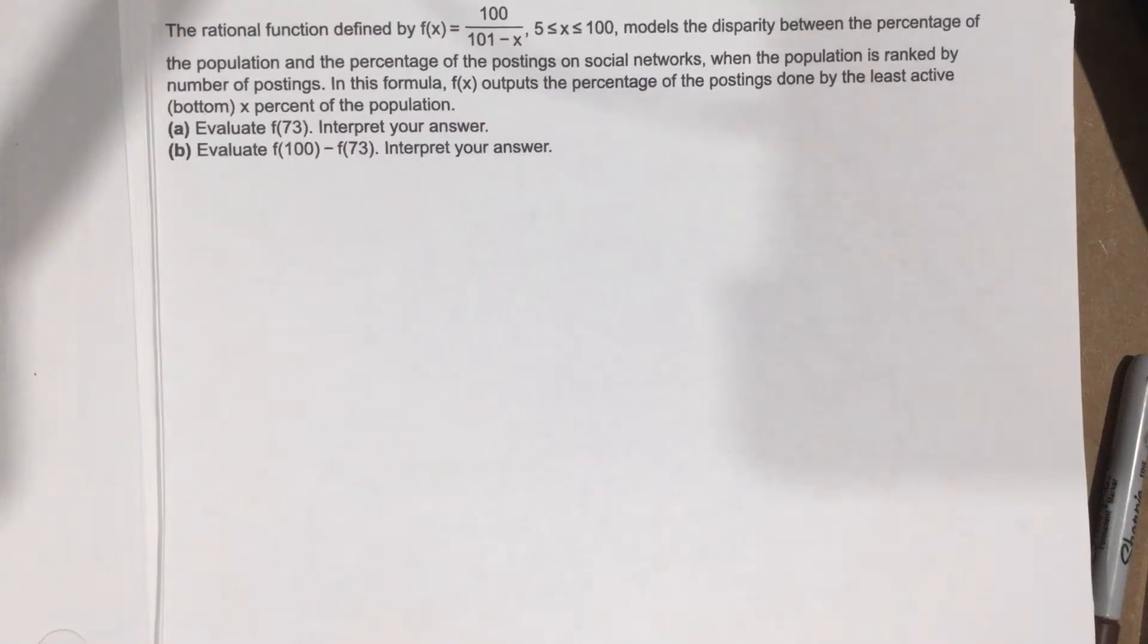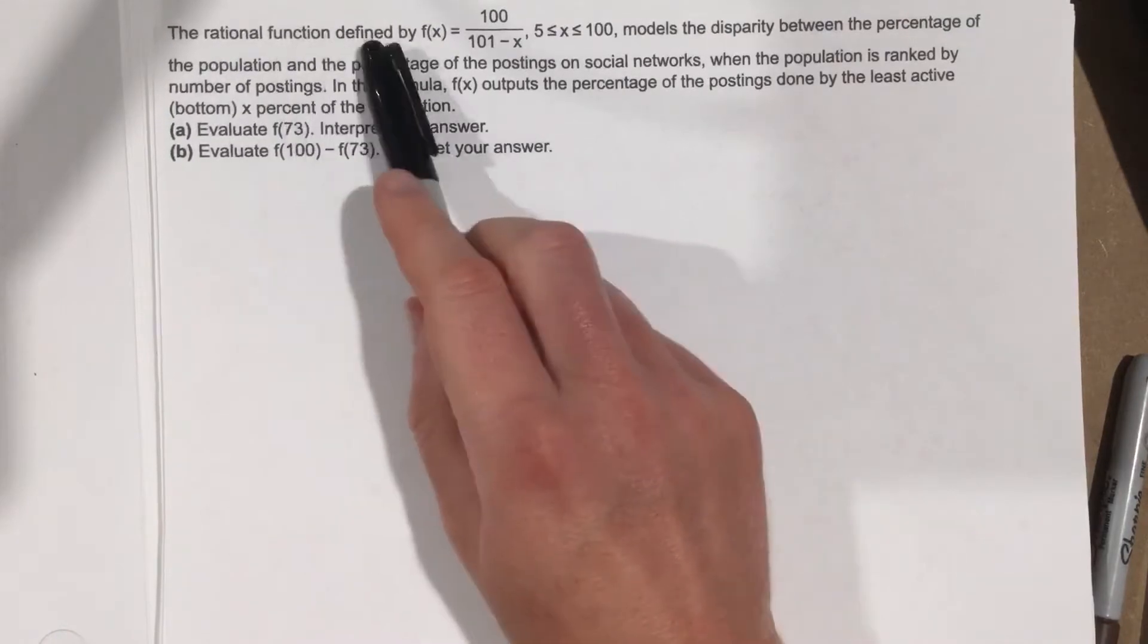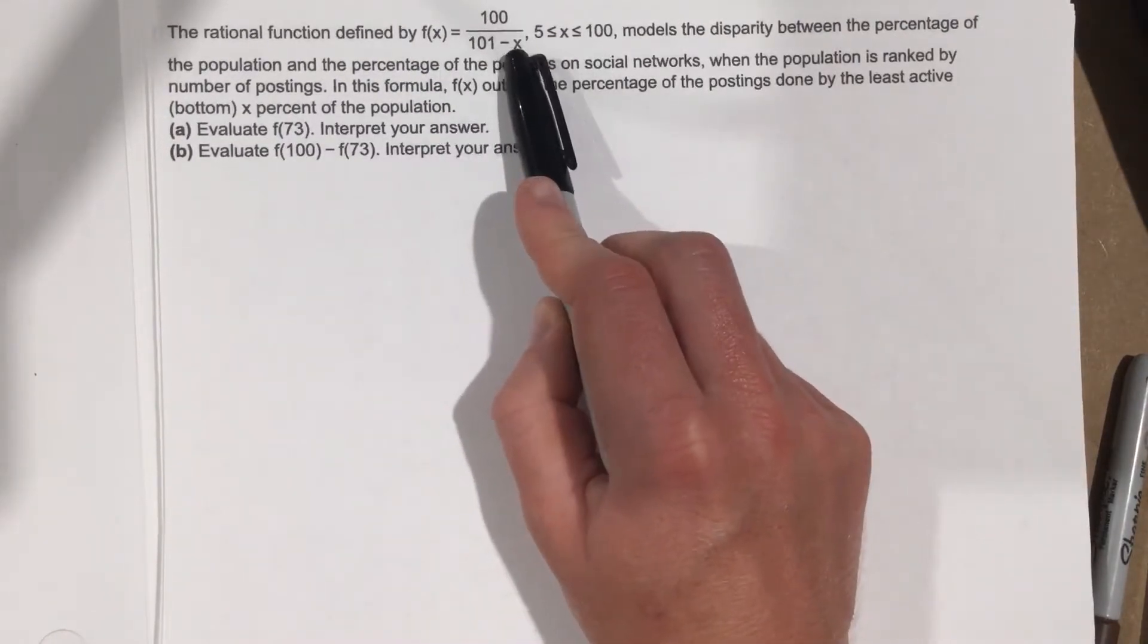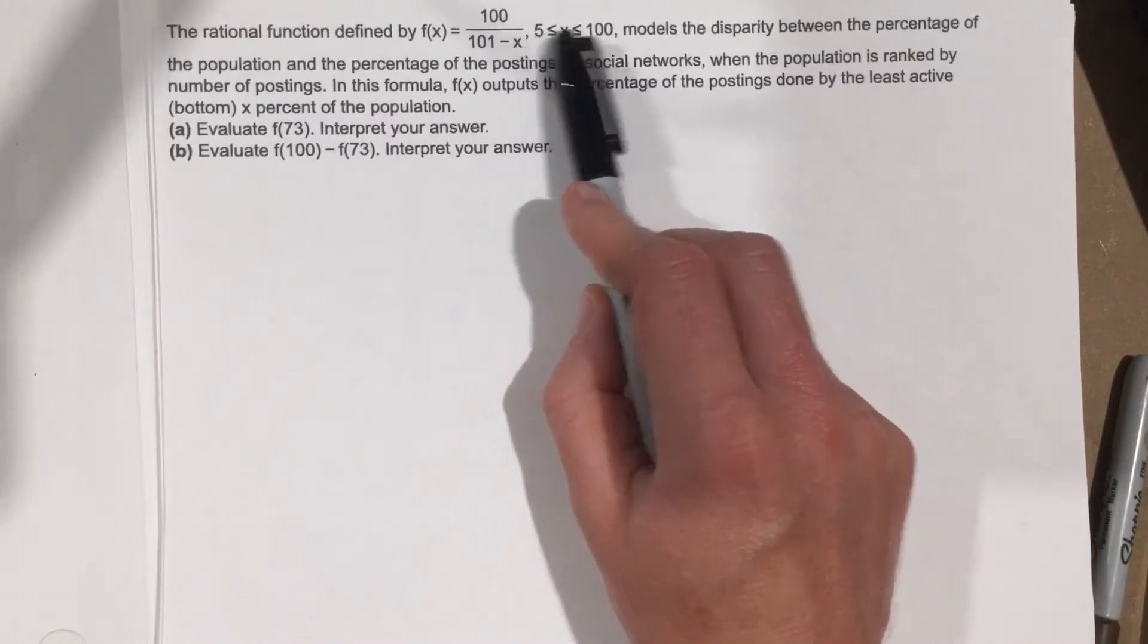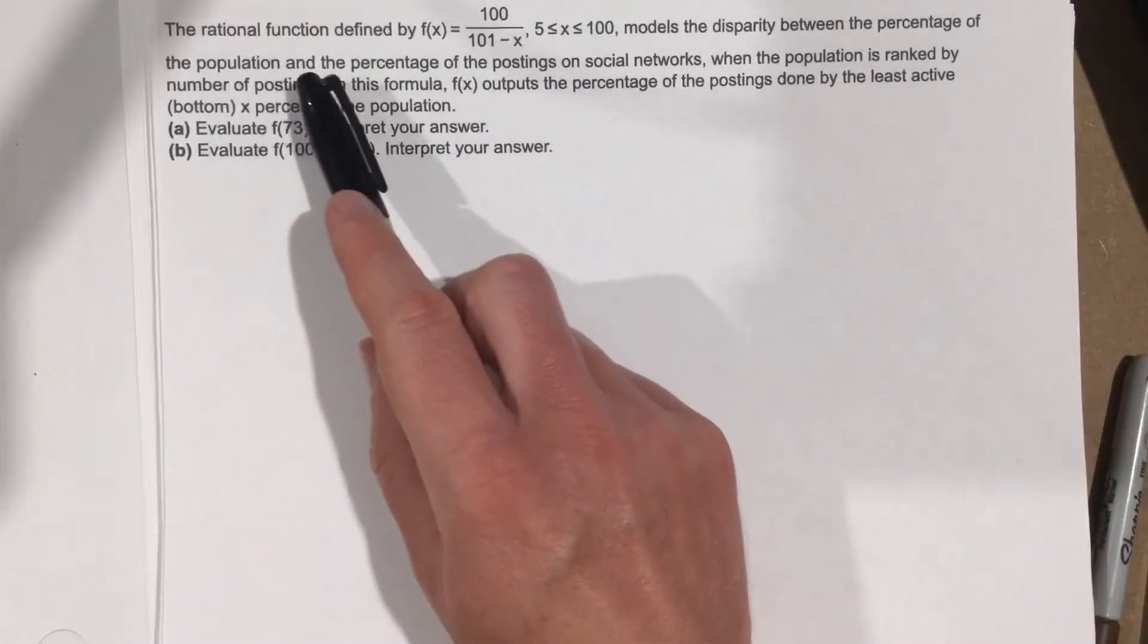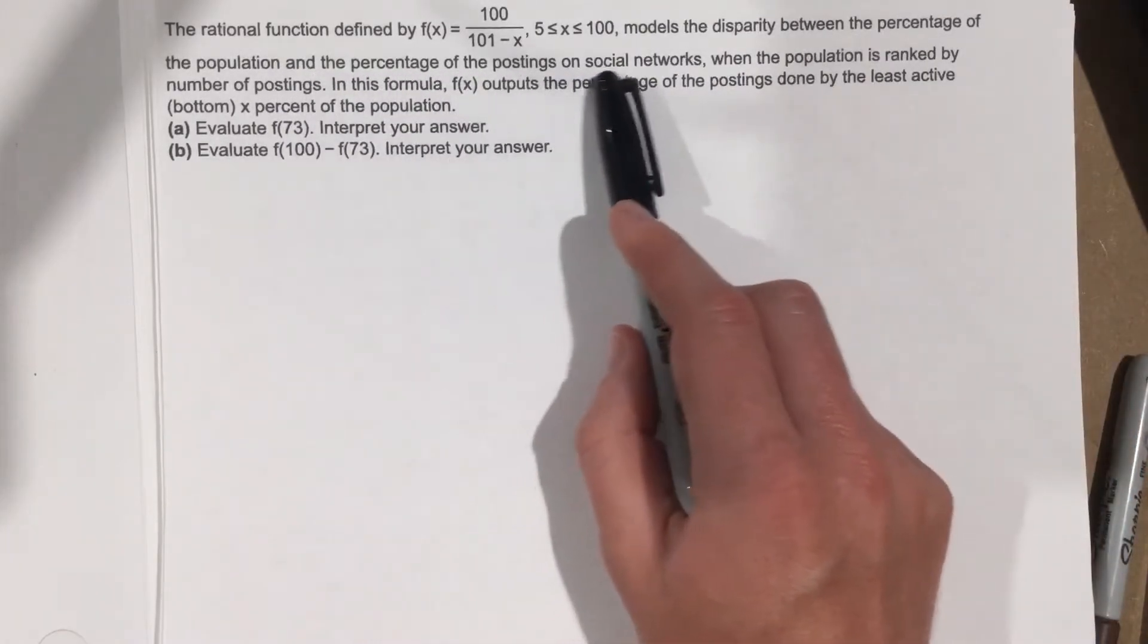This is problem number 8 from section 4.6. The rational function defined by f(x) equals 100 over 101 minus x from 5 to 100 models the disparity between the percentage of the population and the percentage of the postings on social networks.